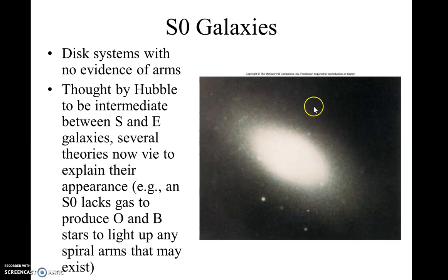This is an S0 galaxy. Hubble didn't really know what to do with this particular galaxy — he thought it was a transition between spiral galaxies and elliptical galaxies. It turns out that's not true; they're kind of their own little thing.